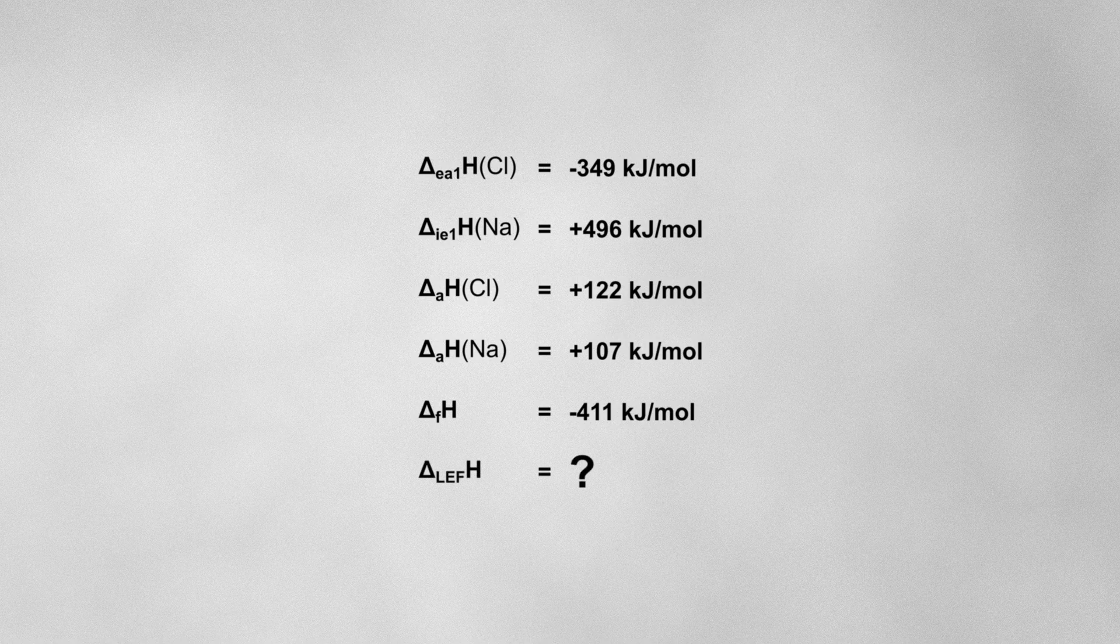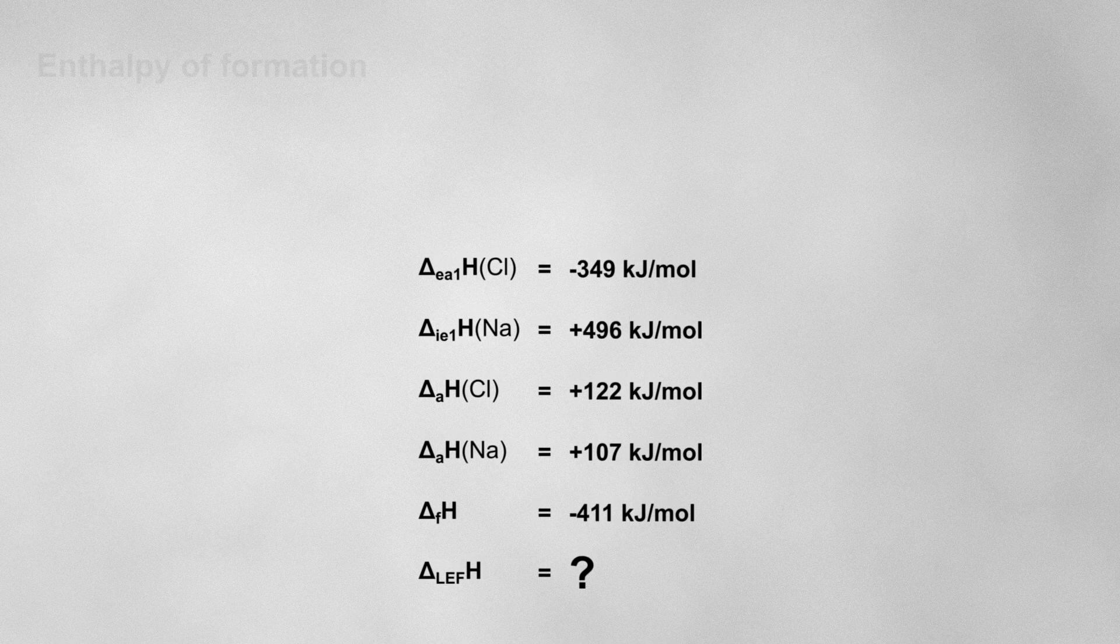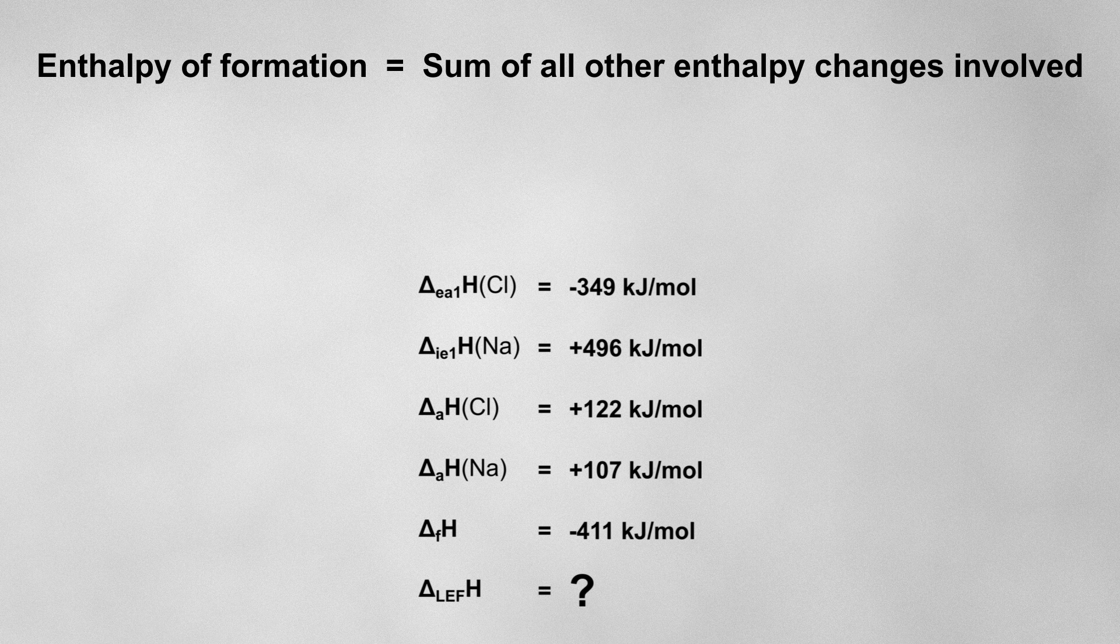In an exam, you might be given a load of enthalpy changes and asked to calculate the missing lattice formation enthalpy. The easiest way to do this is to use the formula: enthalpy of formation is equal to the sum of all of the other enthalpy changes involved in the Born-Haber cycle.